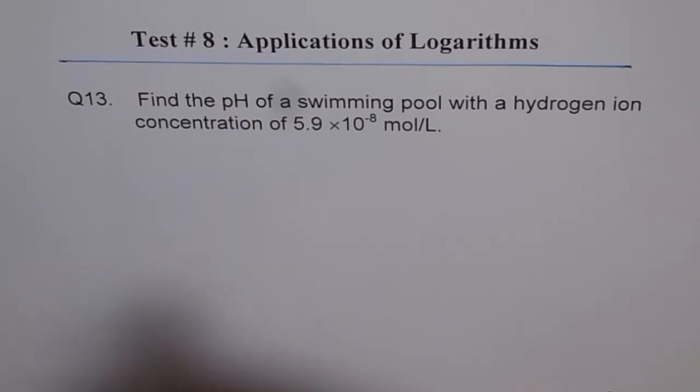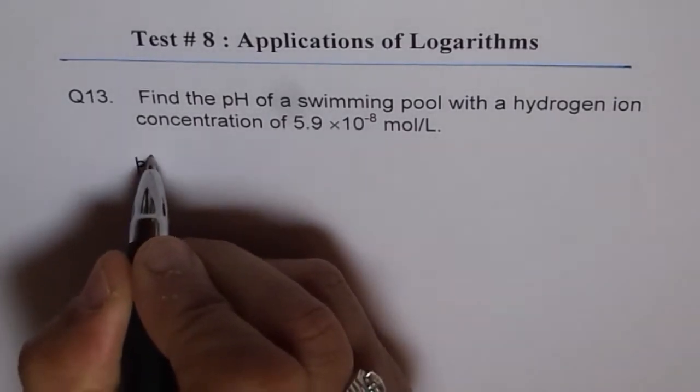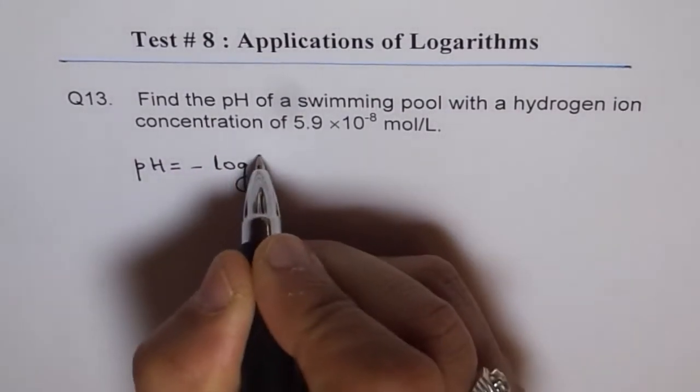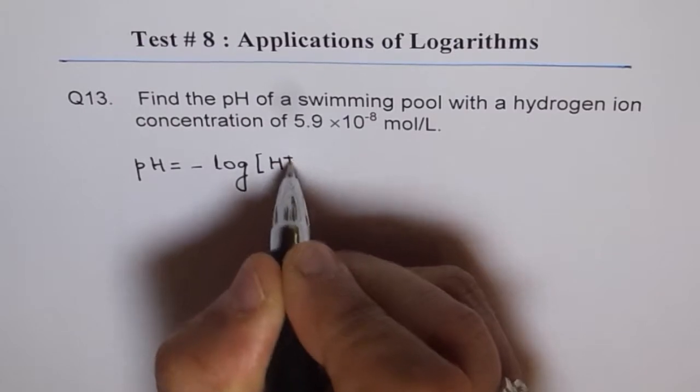Well, the formula for pH is pH equals minus log times concentration of hydrogen ions.